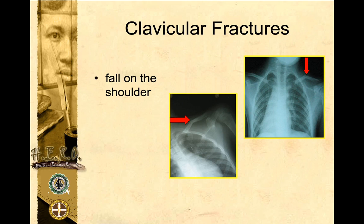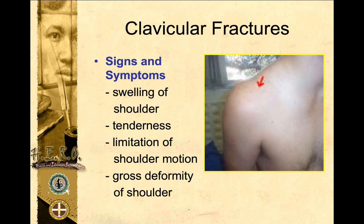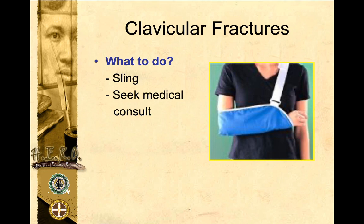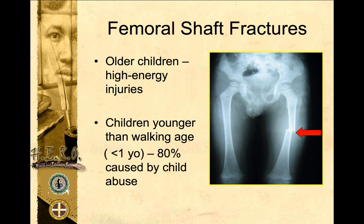For collarbone fractures, this is a direct fall on the shoulder on the lateral side, causing compression of the collar bone. Signs and symptoms include swelling of the shoulder, tenderness, limitation of motion, and gross deformity — you can sometimes palpate a prominent collarbone. When suspecting a clavicular or collarbone fracture, the first thing to do is apply an arm sling and seek medical consult.